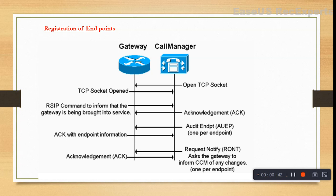Even if you have a PRI which is up and active from the provider side, and you have configured it on the voice gateway with all the proper commands, channels, and L3 binding, until it is registered with the Call Manager it will not work. It is mandatory for any MGCP controlled endpoint — PRI, FXO, FXS, or CAS — to get registered with the Call Manager and show as registered under the MGCP gateway.